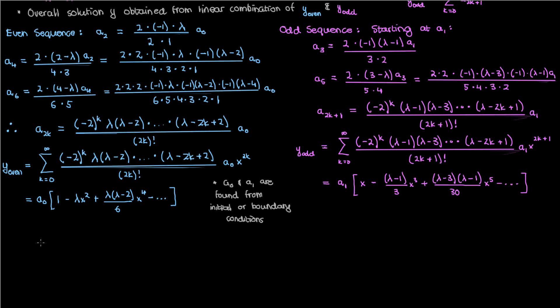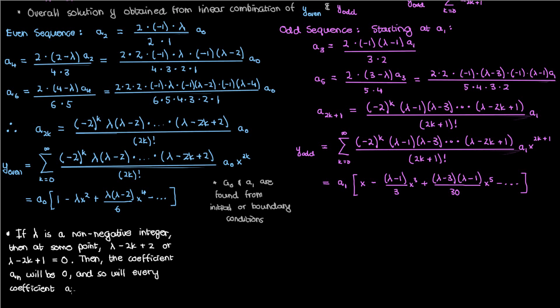Remember that λ is an unknown constant that was originally specified in our differential equation. If λ happens to be a non-negative integer, then there may come a point when λ-2k+2 or λ-2k+1 is 0. And then once that happens, the corresponding coefficient becomes 0. And in addition to that, since each coefficient is related to the coefficient that's two spaces behind it by the recursion relation, every subsequent coefficient will also be 0. So if the a_n term is 0, then a_{n+2}, a_{n+4}, etc., they're all going to be 0 as well.